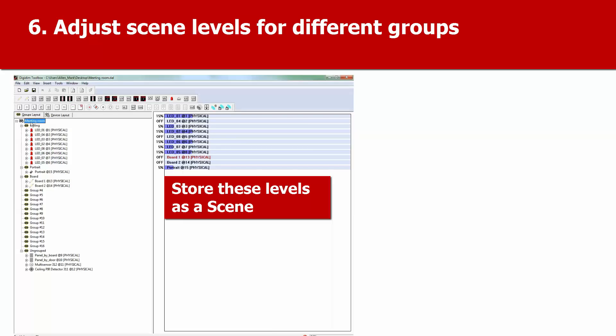To store these levels as a lighting scene, select the network name in the groups layout, right-click, and store as scene 3.